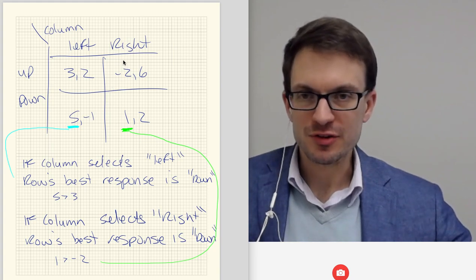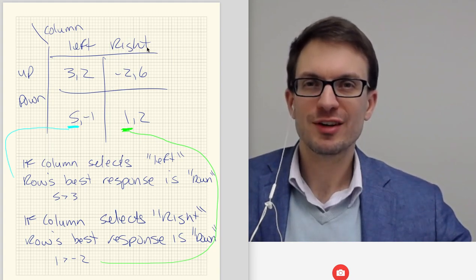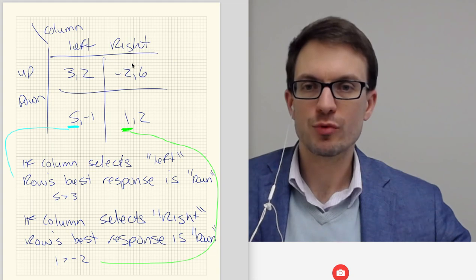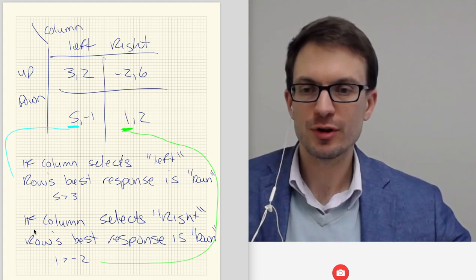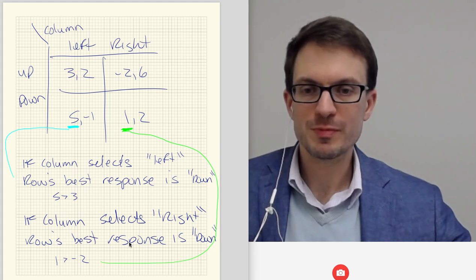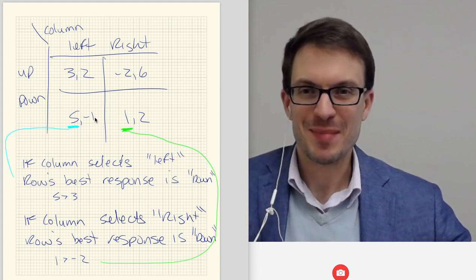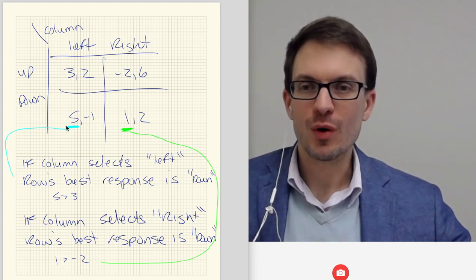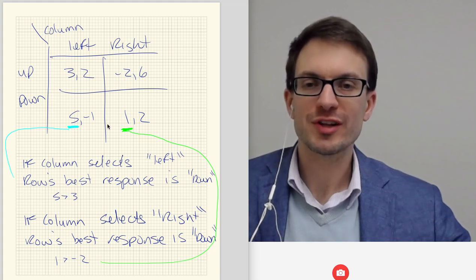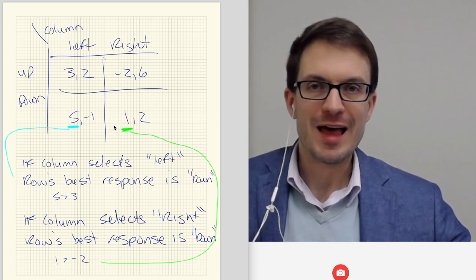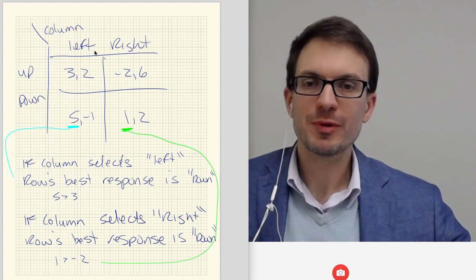Now what if hypothetically instead, column player chooses right? Well, if column player has chosen right, row's best response is down because 1 is bigger than minus 2. If column selects right, row's best response is down. 1 is bigger than minus 2, so I'll underline 1. And notice, it actually didn't matter what column player did. Row always wants to choose down. Row actually has a dominant strategy. Not all games have dominant strategies, but this one does.